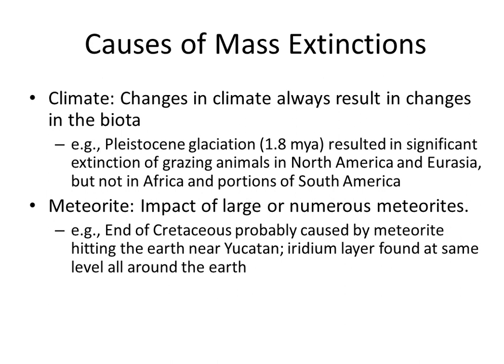The causes of mass extinctions were: first, climate. Changes in climate always result in changes in the biota. For example, the Pleistocene glaciation resulted in significant extinction of grazing animals in North America and Eurasia, but not in Africa and portions of South America. Another cause was meteorite impact. This happened at the end of the Cretaceous era, probably caused by a meteorite hitting the Earth near Yucatan. A radium layer found at the same level all around the Earth indicates that's what happened.